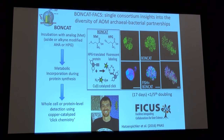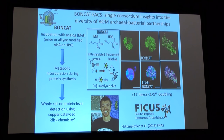We decided to try a different approach — instead of computationally de-convolving the diversity, try to physically separate organisms before sequencing. We had the great fortune of working with Tanya Vojka and Rex Malmstrom and their group with a single-cell pipeline. The idea was to use the BONCAT technique combined with their flow-sorting single-cell pipeline to separate out individual aggregates and get information about the membership and genomes of these organisms, initially through a director's discretionary fund and now through FICUS funding with the JGI.